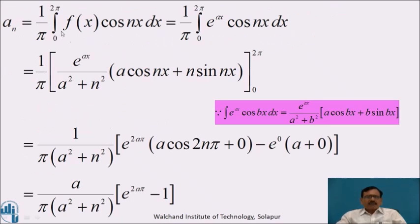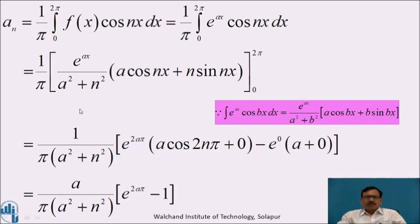Now we calculate aₙ: aₙ = (1/π) ∫₀^(2π) f(x) cos nx dx = (1/π) ∫₀^(2π) e^(ax) cos nx dx. Using the standard formula ∫e^(ax) cos bx dx = e^(ax)/(a²+b²) · (a cos bx + b sin bx), we get (1/π) · e^(ax)/(a²+n²) · (a cos nx + n sin nx) evaluated from 0 to 2π.